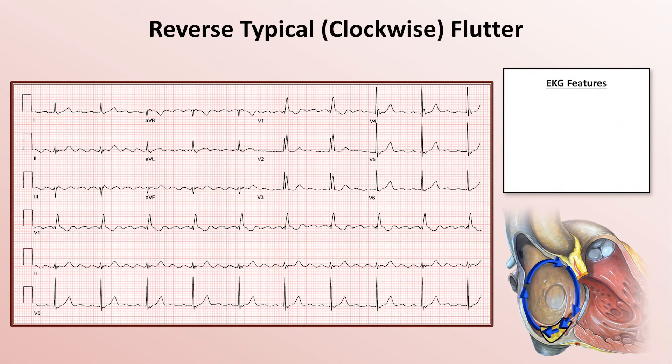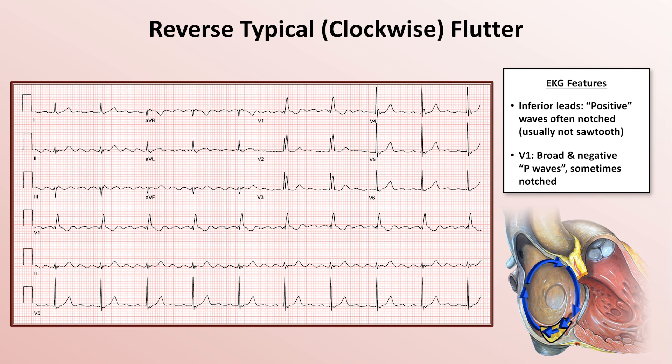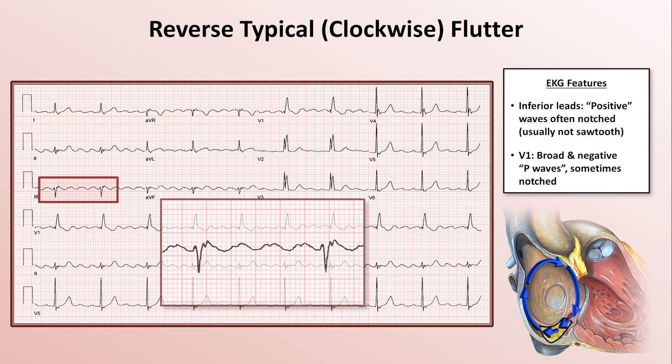Here is an example of reverse typical or clockwise flutter. This is seen when the depolarization wavefront moves up the lateral free wall, medially across the top of the right atrium, down the intraatrial septum, and laterally across the isthmus. On EKG, the flutter waves in the inferior leads are usually positive and often notched. Atrial depolarizations in V1 are negative and relatively broad, and sometimes notched. Let me zoom in on lead 3 to show the notching more clearly.